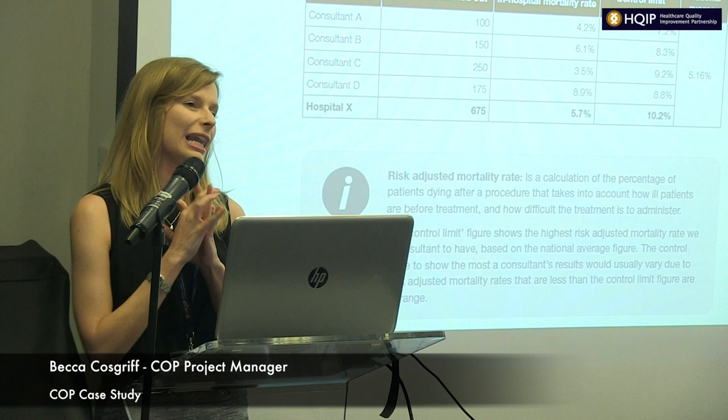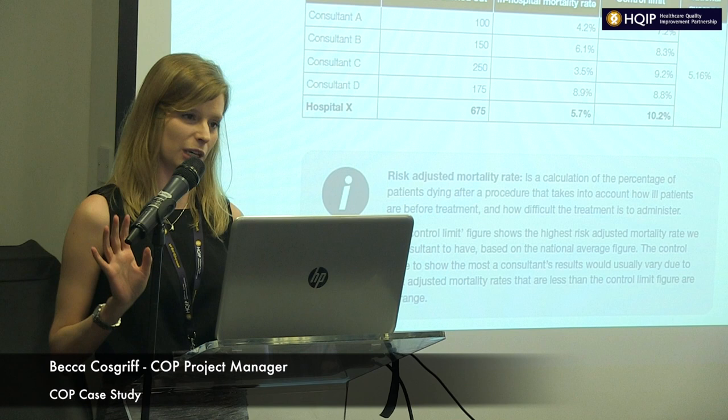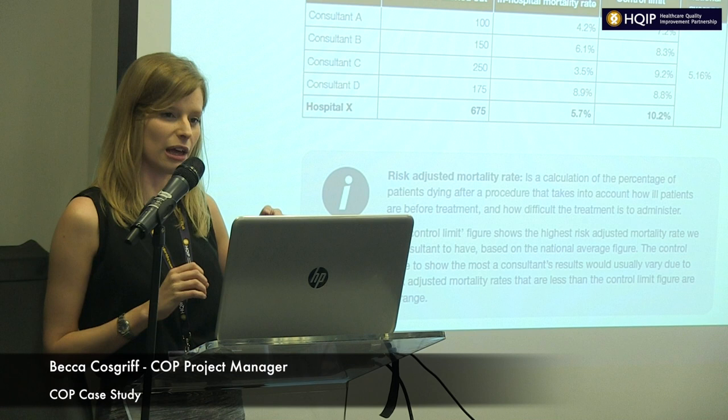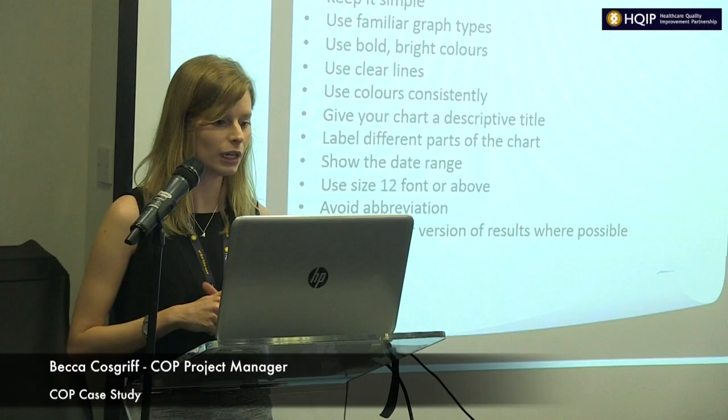Not to neglect tables — it's easy to assume that just because something is a table it's automatically easy to understand. But a table with 250 rows, no guidelines, and all one colour is very hard to follow across five columns. It's really important to have shading and guidelines to differentiate between rows, make sure all column headers are descriptive, give your table a title, include a date range, and provide an explanation — for example, if risk-adjusted mortality rates are included, make sure that's explained.